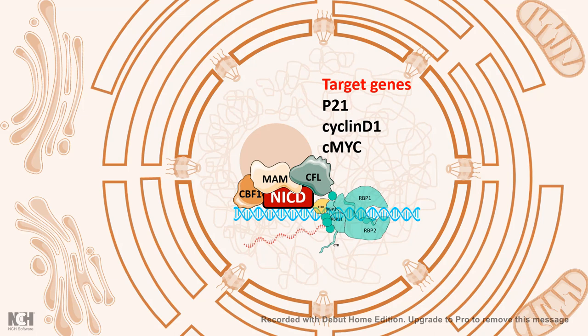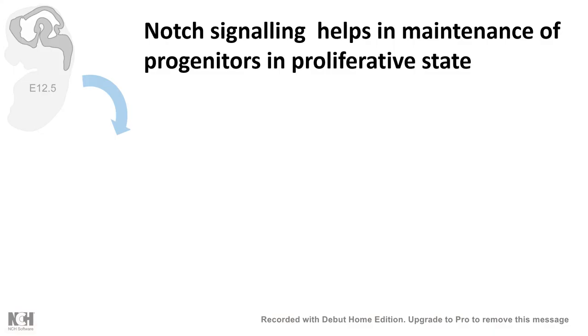That is why, in the context of cancer, Notch signaling is found to be heavily altered. Increased Notch signaling would increase cellular proliferation and might lead to cancer.